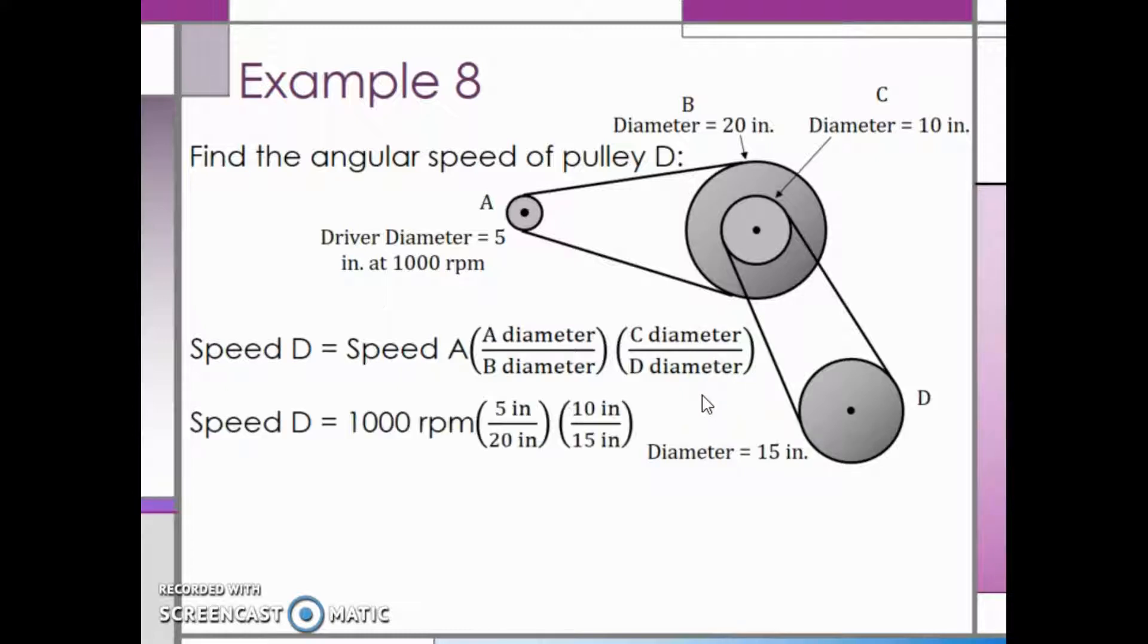Substituting in our values, the speed of A is 1000 RPM and we multiply that by the ratio of 5 inches to 20 inches and multiply that by the ratio of 10 inches to 15 inches. When we punch that into our calculators, we see that the speed of pulley D is around 167 RPM.